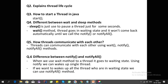Threads can communicate with each other using wait, notify, and notifyAll. The difference between notify and notifyAll: using wait a thread goes to waiting state; using notify we can wake up a single thread. If we want to wake up all threads that are in waiting state we use notifyAll. For example, if you have 50 threads and don't know which ones are waiting, you can use notifyAll to wake all of them. The notify method is used to notify just one thread.